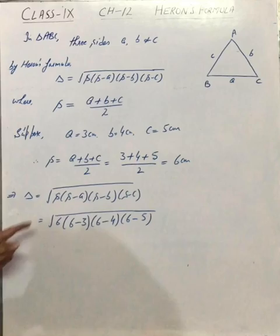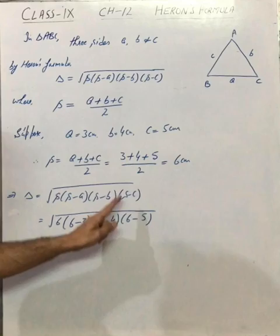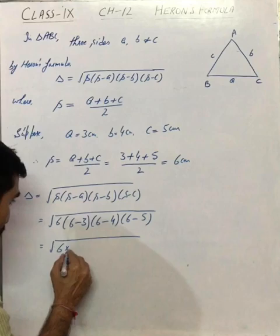I hope it's clear to you. S is 6, S minus A is 6 minus 3, S minus B is 6 minus 4, S minus C is 6 minus 5. Let's calculate it. 6 as it is, 6 minus 3 gives you 3, 6 minus 4 gives you 2, 6 minus 5 gives you 1.